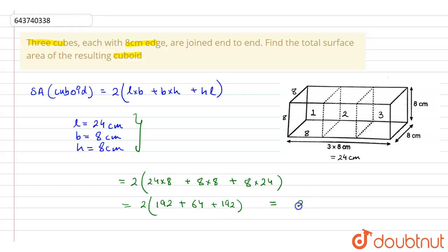If we again simplify it further we will get 2 into 448, the sum of 192 plus 64 plus 192. This equals 448, and if we multiply 448 by 2 it will come out to be 896, and the units are centimeter square.